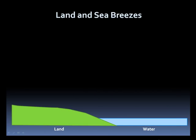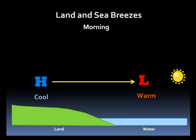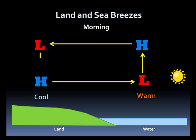First, land and sea breezes. We will start by looking at what occurs in the morning. In the morning, the land is generally cooler than the water, and small, weak areas of high and low pressure develop. Air flows from the high to the low, so it moves from the land to the water. In response, that air will rise, and then a portion will move back over the land. This completes a circulation and is known as a land breeze.